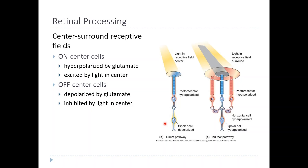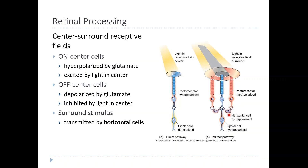On-center cells are excited by light in the center and inhibited by light in the surround, whereas off-center cells are inhibited by light in the center. All center-surround receptive fields also have a surround — that's where the name comes from. The surround refers to those cells that surround the center, connected indirectly to the bipolar cell through horizontal cells. In all cells with a center-surround receptive field, the effect of light in the center is always the opposite of the effect of light in the surround. An on-center cell is stimulated by light in the center and inhibited by light in the surround; an off-center cell is inhibited by light in the center and stimulated by light in the surround.